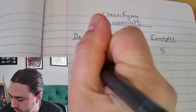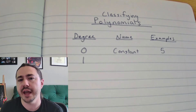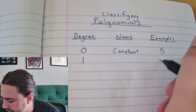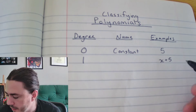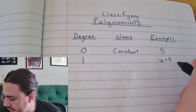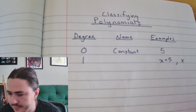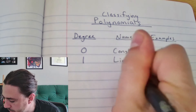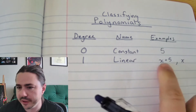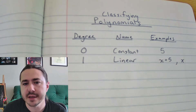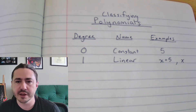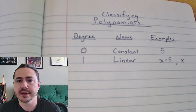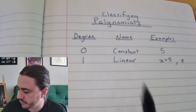A degree 1 polynomial — you still won't see an actual exponent in the expression, but you will have an x. So like if you have something like x plus 5, or x minus 7, or even just x, then you have a linear polynomial. This is the type of expression we spent the majority of first semester on — graphing linear functions, y equals mx plus b, all that good stuff.